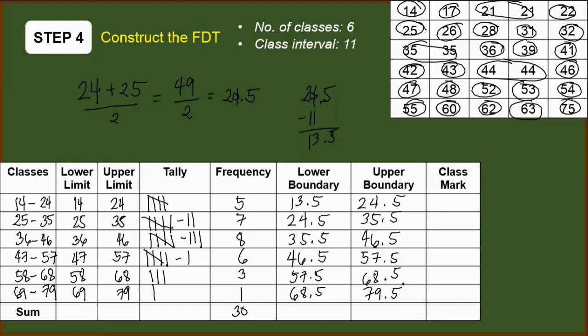Next part is class mark. Class mark is also known as the midpoint of the class. So what we're going to do to get the midpoint is we'll add the lower and the upper limit and then divide it by 2, or just get the average of both the upper and the lower limits. So doing that, we have 14 plus 24 divided by 2. Thus, we will have 38 divided by 2 or simply 19. So this is 19.